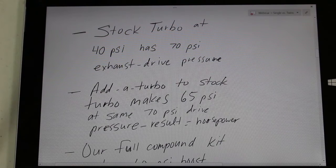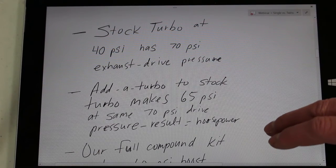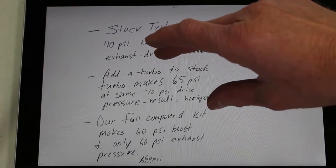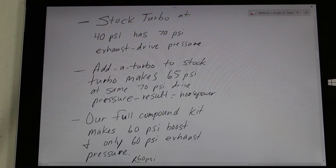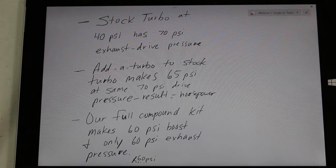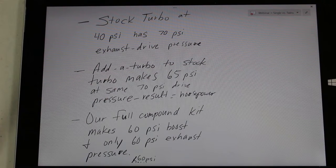So now to focus on my statement of increasing the horsepower by making the drive and boost pressure more equal. Here's an example of a stock turbo running at 40 PSI of pressure. It will typically have the exhaust drive pressure of 70 PSI, meaning the intake manifold would have 40 PSI of boost and the exhaust pressure, or the exhaust manifold is going to have a pressure of 70 PSI.